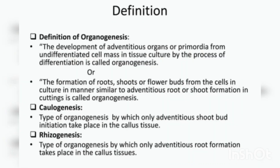So what is organogenesis? We can define organogenesis as the development of adventitious organs or primordia from undifferentiated cell masses in tissue culture by the process of differentiation.